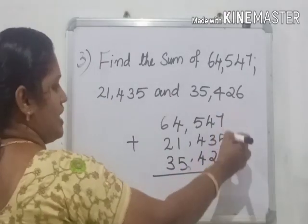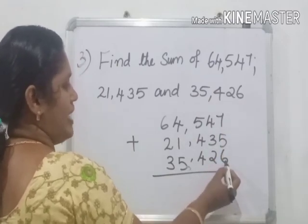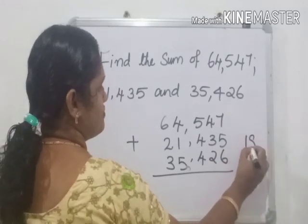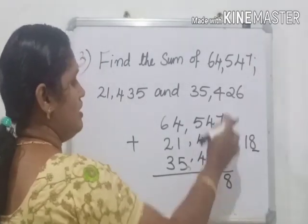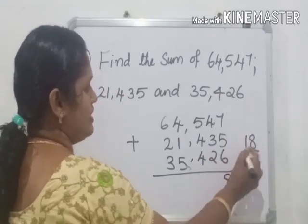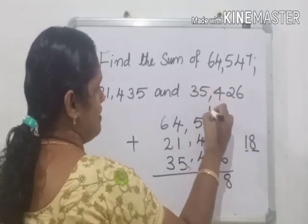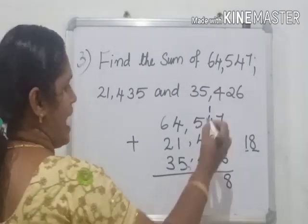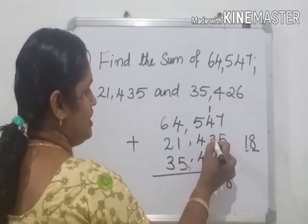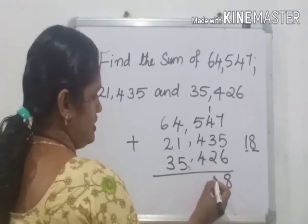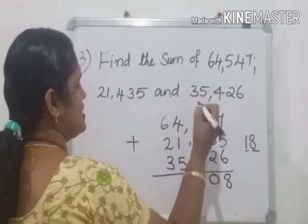When we add these 3 numbers, 7 plus 5 is 12, 12 plus 6 is 18. We have to write the units place digit here below the units place, and the tens place digit is 1. We have to write just above tens place. Clear? Then add 4 plus 1 is 5, 5 plus 3 is 8, 8 plus 2 is 10. Zero right here, carryover 1, right? Just above hundreds place.